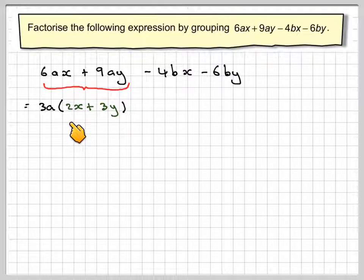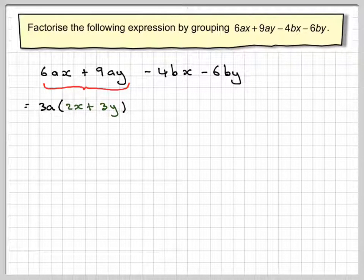We can just check that. 3 times 2 gives me 6, giving me 6ax, which gets me back to that. And then 3 times 3 gives me 9ay. So, you can always go back by just checking.